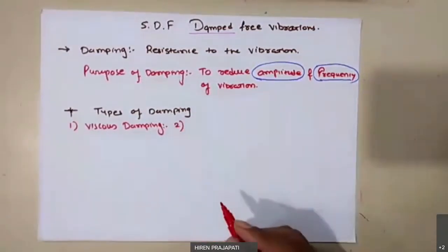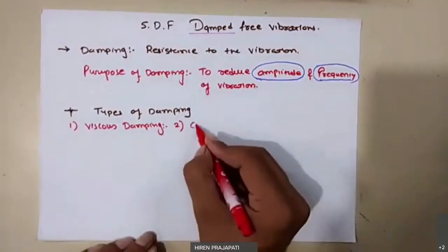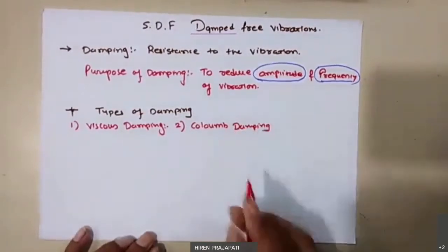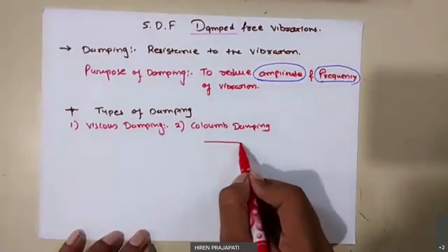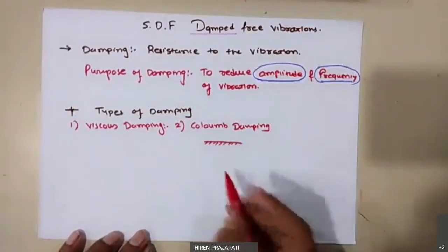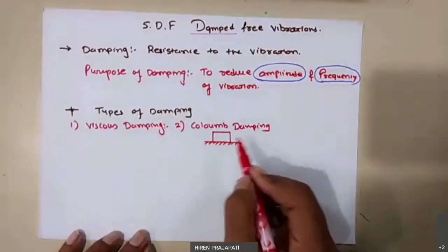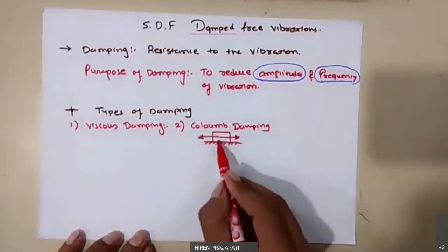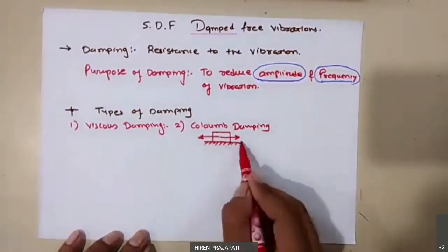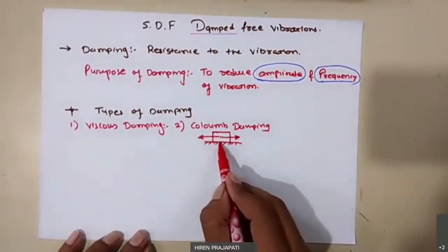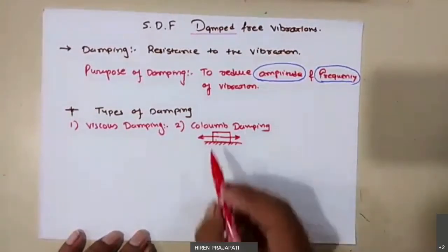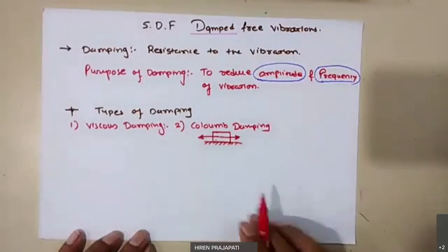The second type is Coulomb damping. If you consider one fixed surface over which another surface is vibrating to and fro, suppose a mass is oscillating on a fixed surface — every time some frictional resistance takes place between these two bodies, and due to that friction we get reduction in the amplitude of vibration. That type of damping is called Coulomb damping.